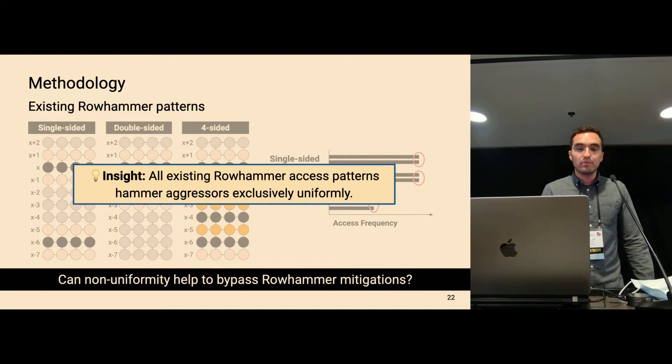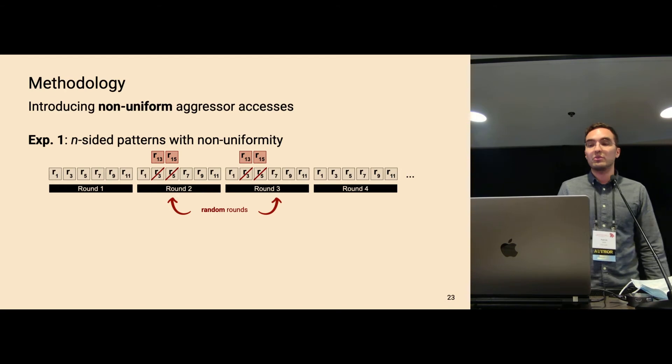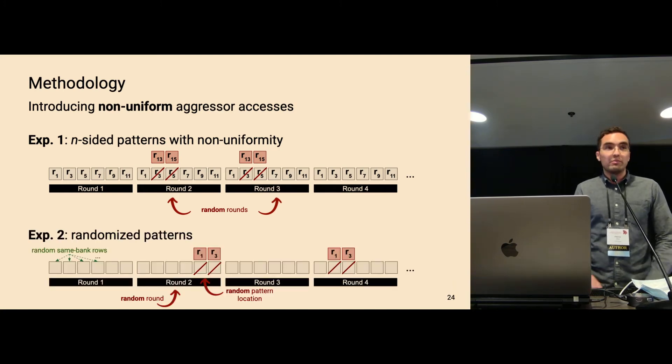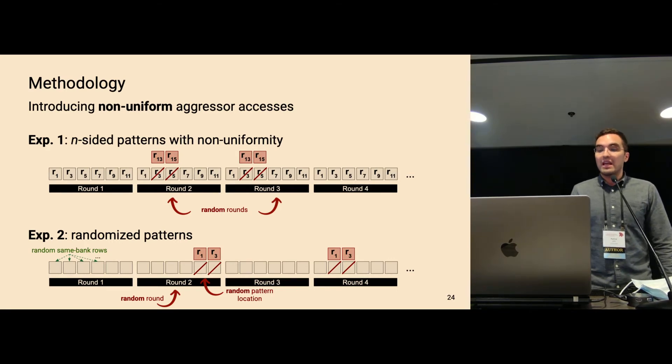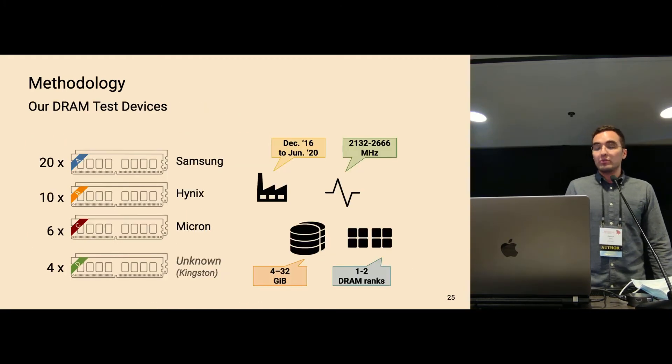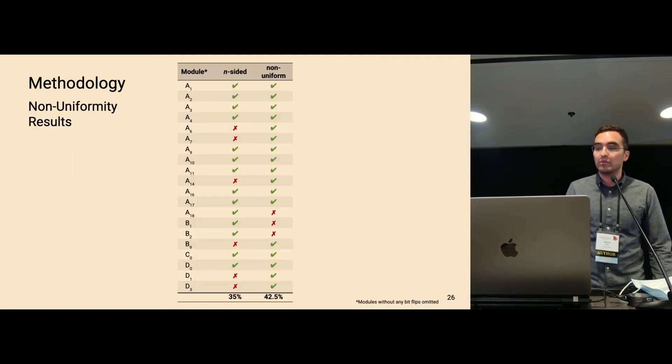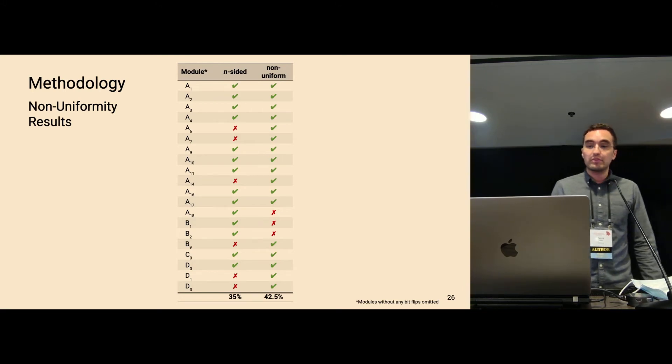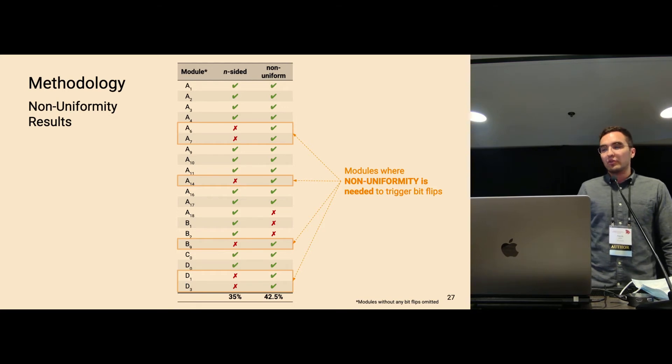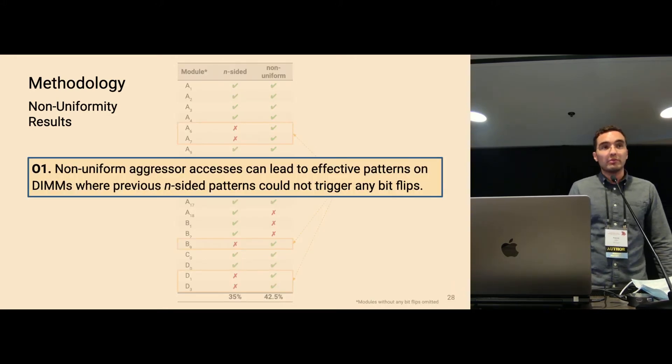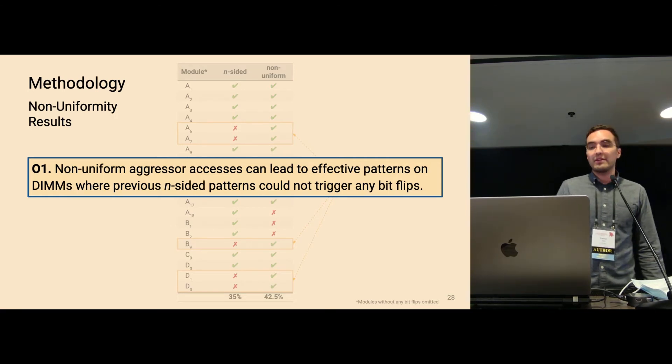To answer that, we have designed two experiments. So in the first experiment, we take n-sided patterns and introduce some non-uniformity by replacing aggressors in random rounds by a dedicated aggressor pair. So here in this example, rows 13 and 15. And in the second experiment, we have complete random patterns. So we have random same bank rows that we access. And then at random rounds and random pattern locations, we access again a double-sided aggressor pair here, row one and three. And we run these two experiments on the 40 test devices that we acquired from the three major manufacturers, Samsung, Hynix, and Micron. And here I present you the result of this experiment. So we compare our non-uniform patterns against n-sided patterns. And what we can see here is that non-uniformity is really needed on some devices to bypass the mitigations and trigger bit flips. So this is the first observation that we made, that non-uniform aggressor accesses can lead to effective patterns where previous n-sided patterns could not trigger any bit flips.